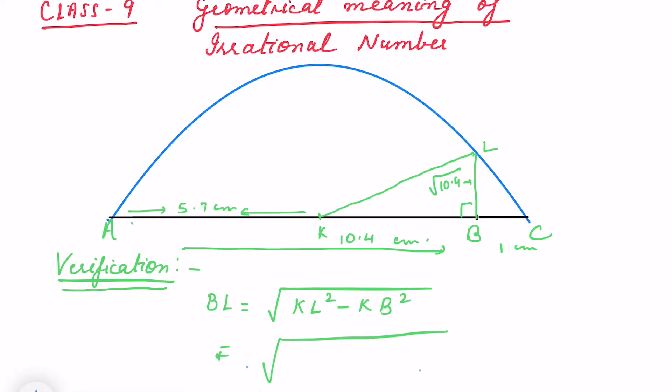So again here I have drawn the figure. Like in the previous figure, you have seen that AB is 10.4, extended to BC that is 1 centimeter. We have done perpendicular bisector of AC to get point K, and from K with KA radius we have drawn a semicircle. At B we draw a 90-degree angle and extend the line. BL is √10.4, but how BL is √10.4 I am going to show you. So I am writing all dimensions.